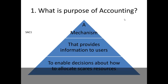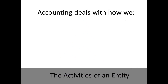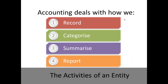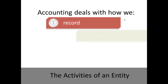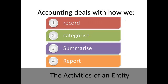We will work through this definition looking at who the users are and what the information is. When considering accounting, we also need to be aware that accounting deals with how we record, categorise, summarise, and report activities of an entity. How we record information in a journal, categorise it in an account, summarise the information in the general ledger and then the trial balance, and how we report the information in the financial statement.